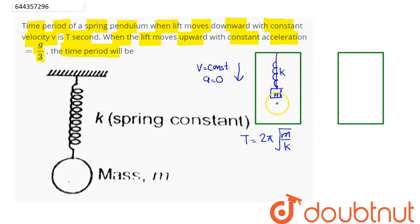So we can say here for the second case, same mass m attached to same spring, or spring constant same k value, moving upward with constant acceleration given in the question as g by three.